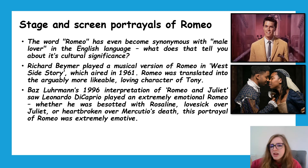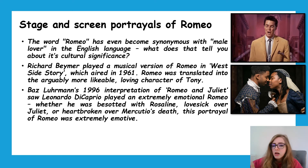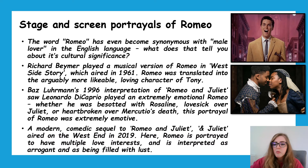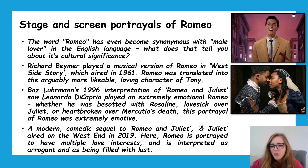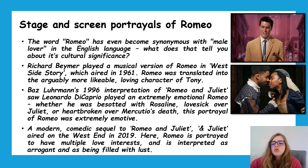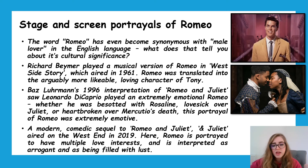In Baz Luhrmann's MTV-inspired version, DiCaprio's Romeo is extremely emotional — besotted with Rosaline, lovesick over Juliet, heartbroken over Mercutio. It's very much driven by emotion. Finally, in the West End show & Juliet, Romeo is portrayed as having multiple love interests — very arrogant, filled with lust — and Juliet is actually put off by him because he comes across as a player. Even though it's comedic, all these interpretations are founded in the text, since Romeo does move from Rosaline to Juliet very quickly.